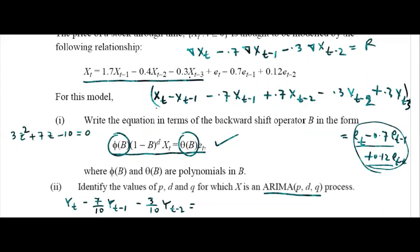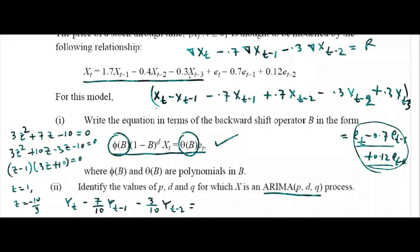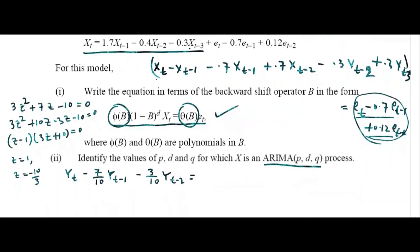I don't have another unit root immediately, but let me factorize: 3z squared minus 7z minus 10 equals 0 gives (z minus 1)(3z plus 10) equals 0. So z equals 1 and z equals minus 10/3. The root minus 10/3 has absolute value greater than 1 — that's fine. So this confirms the ARIMA process. We have to differentiate once again, so D is 2.